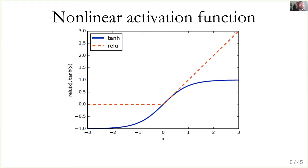The more traditional tanh non-linearity flattens off at the extremes. Since training uses gradient descent, if your activation is in the saturated region the gradient is very flat, making learning very slow. The ReLU doesn't have this vanishing gradient problem because it's just max(0, x). So the basic idea is one or more matrix multiplications followed by a linear connection to the output layer, plus an activation like sigmoid or softmax for classification.